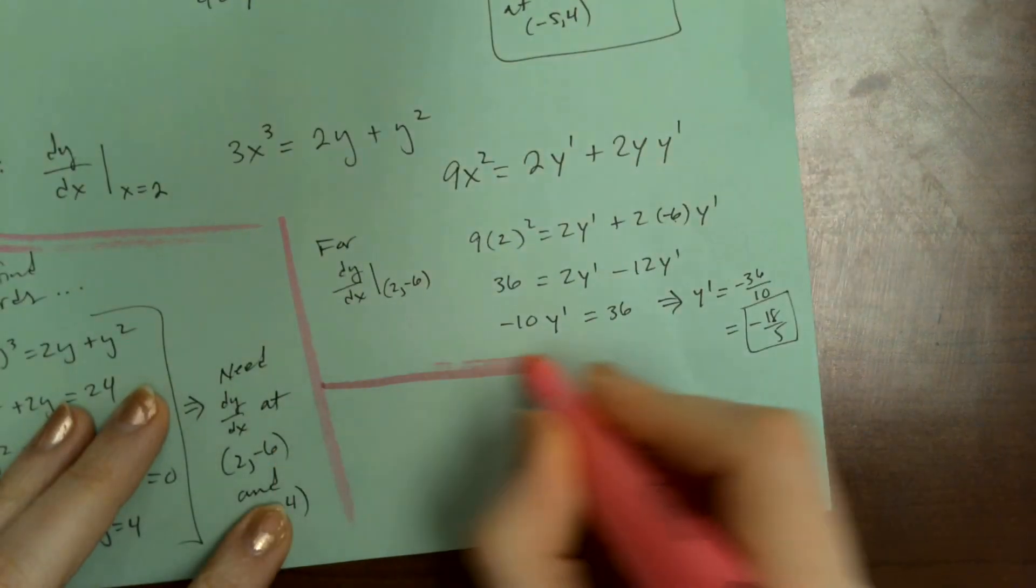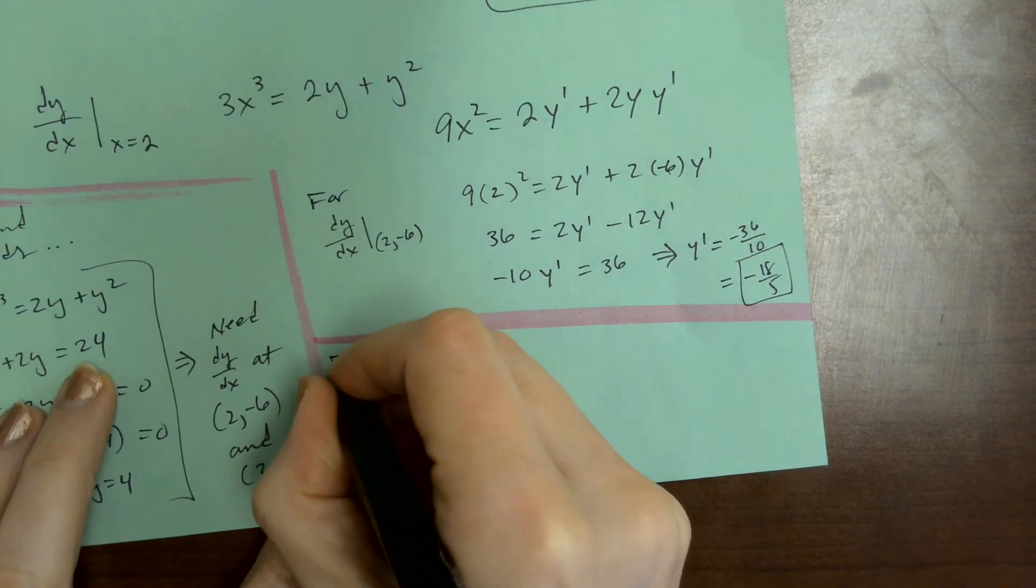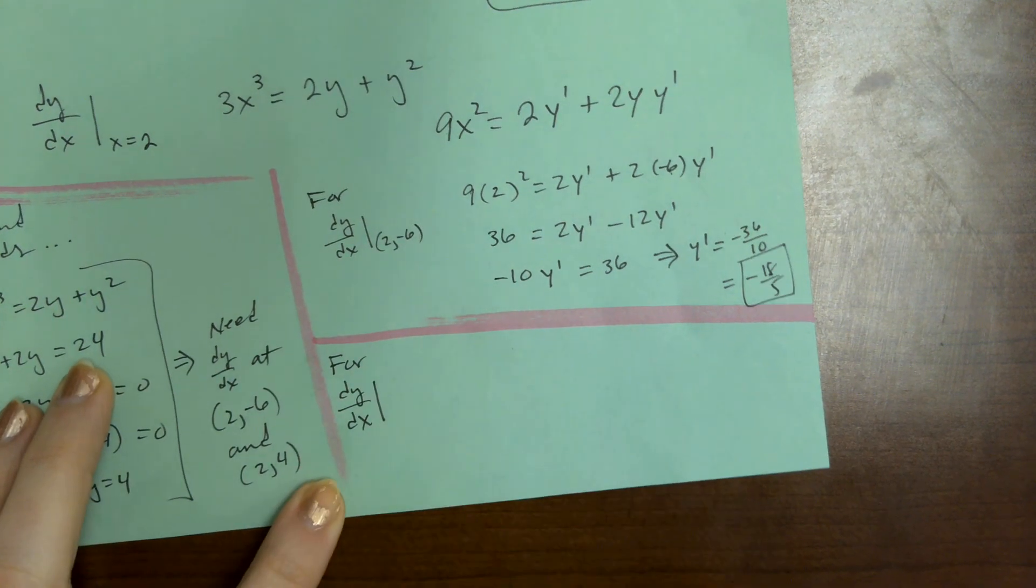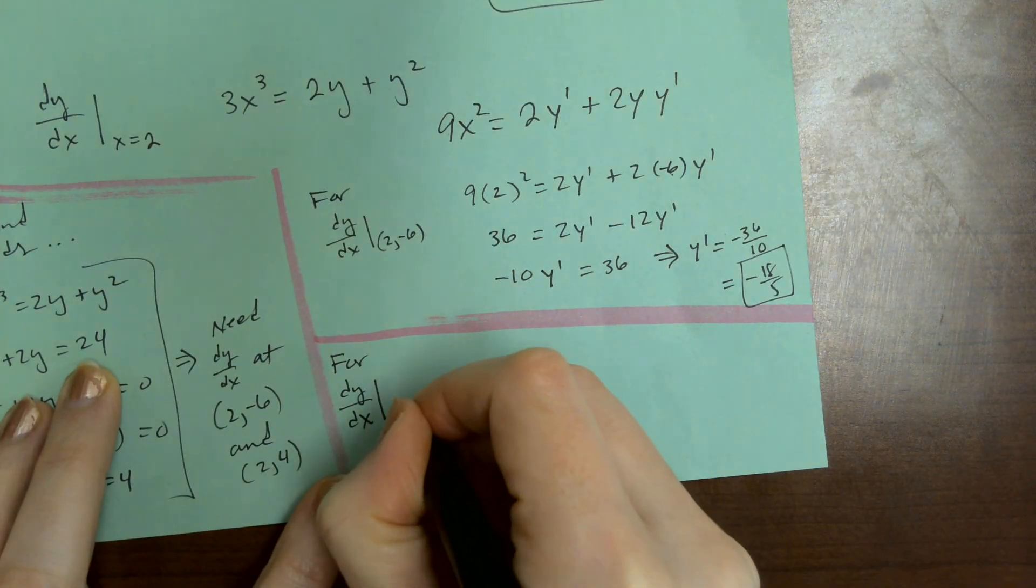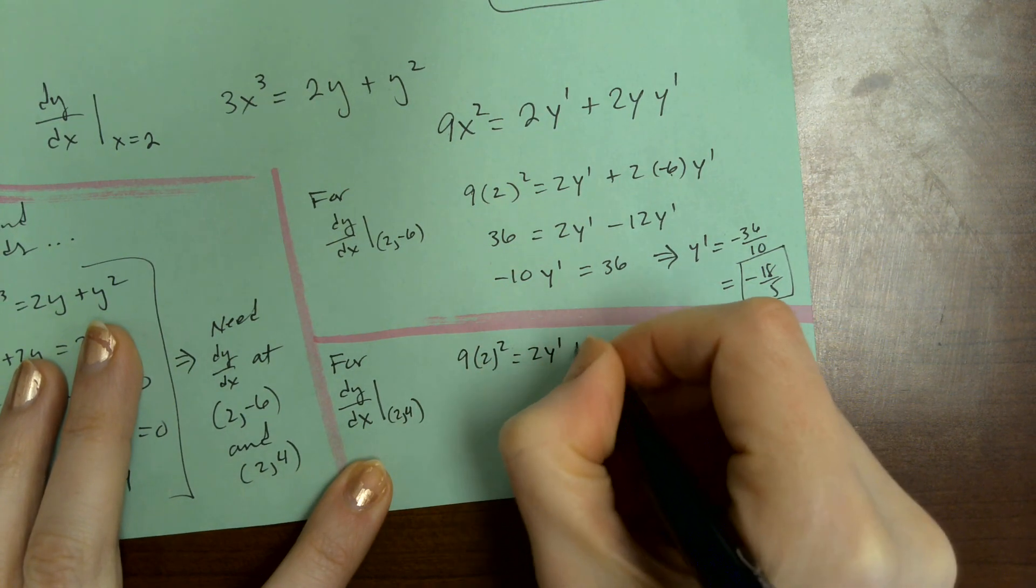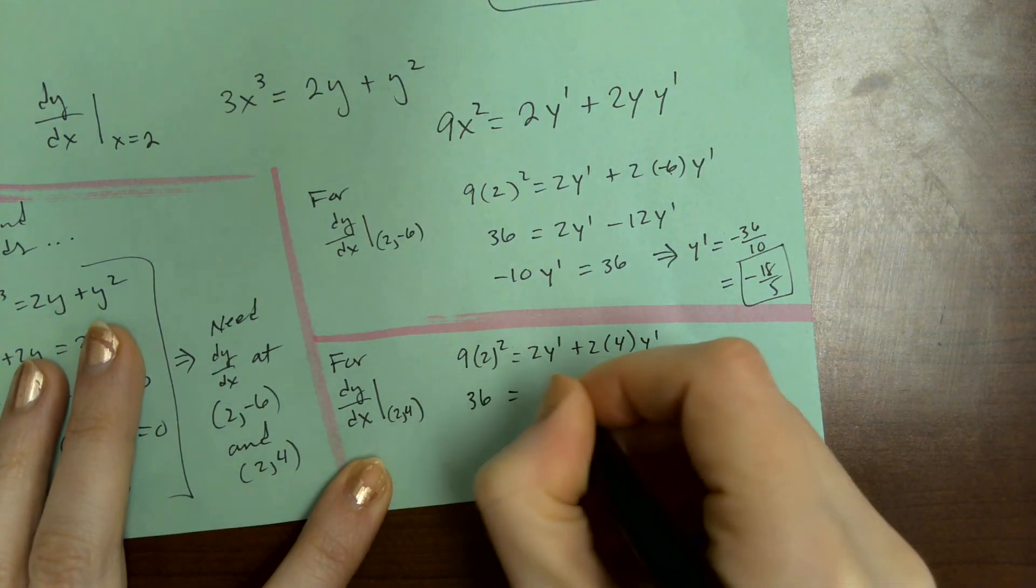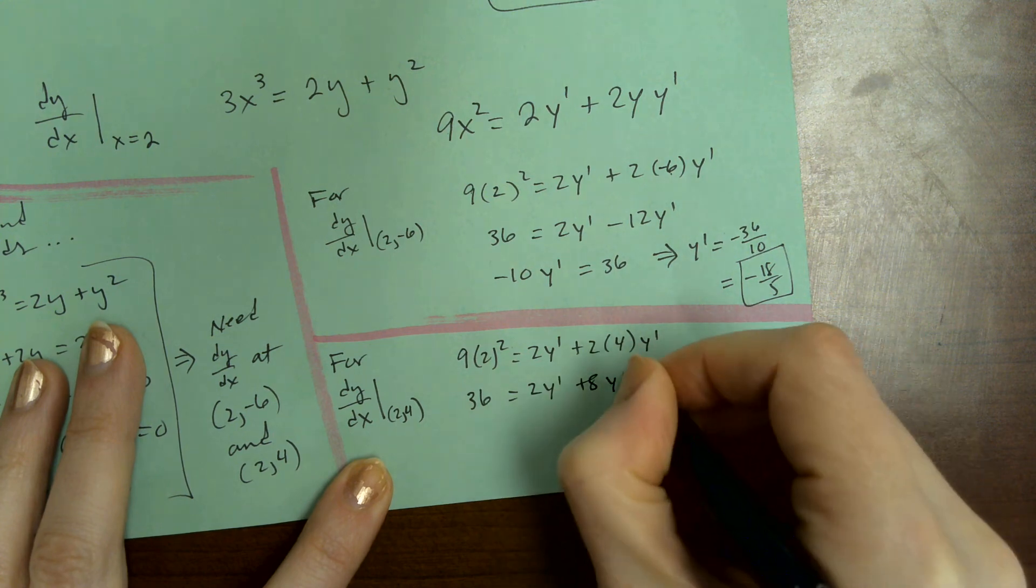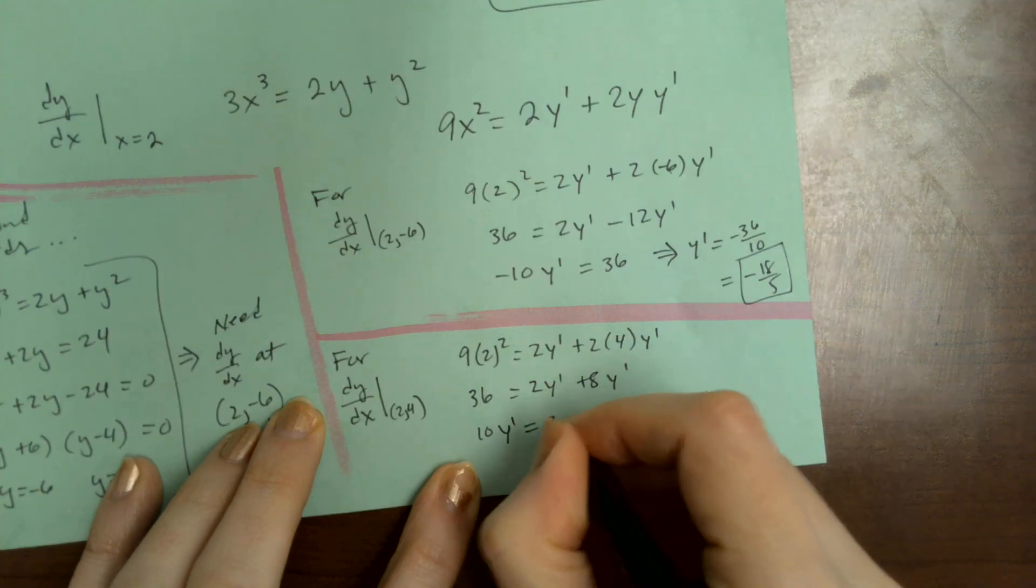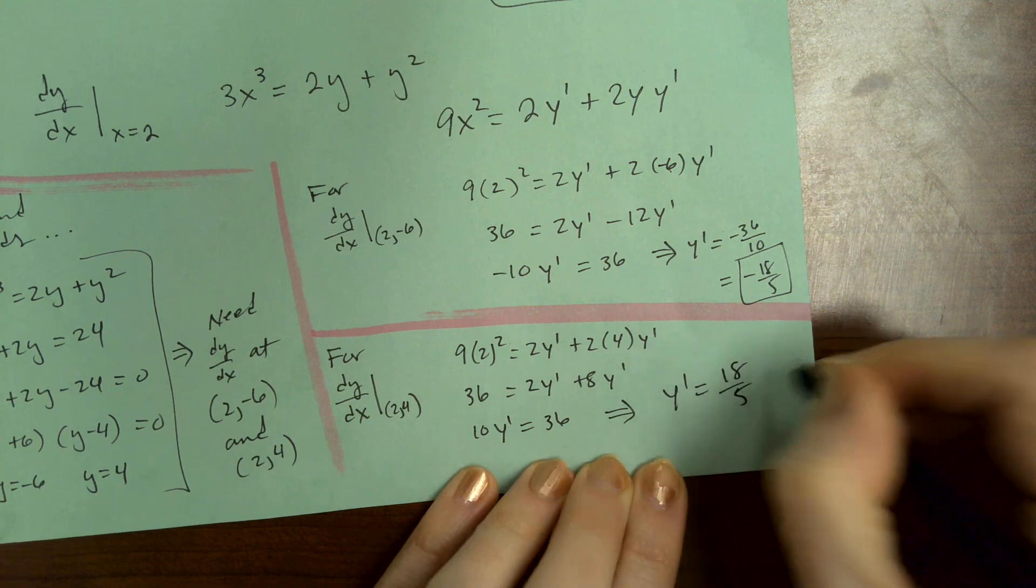Okay. Now we've got to find the one at the other point. So for dy/dx evaluated at 2, 4, 2y prime plus 2 times 4. So this is again 36. So we get 10y prime equals 36. Y prime equals 18 over 5.